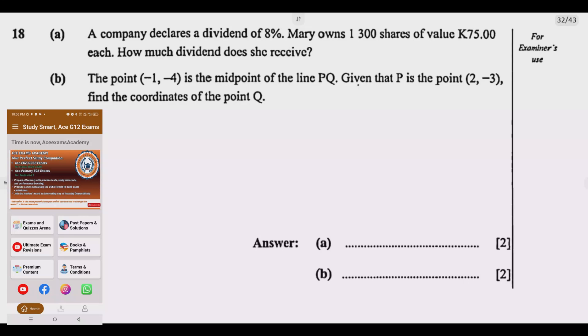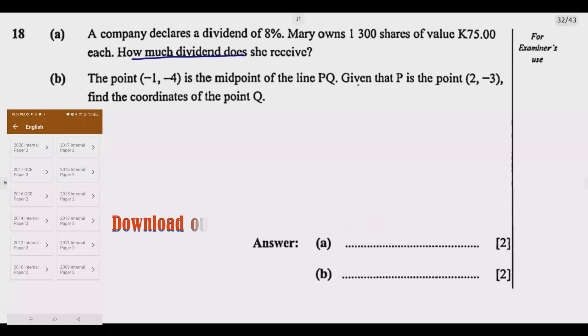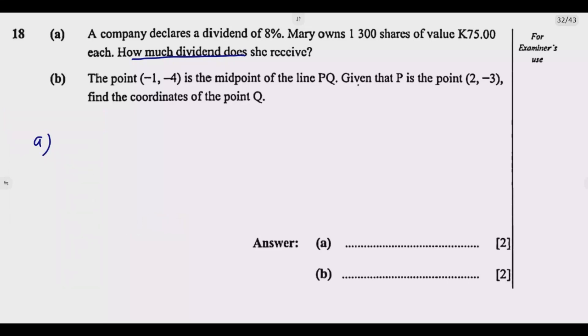So let us start with A. If you look at question A, the first thing is understanding the question. The question is asking us to find how much dividend Mary receives. Mary owns these shares which are valued at 75 kwacha each. So the first thing we need to do is calculate the total nominal value of the shares.